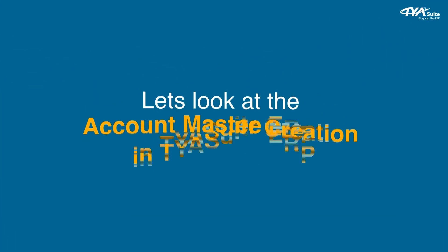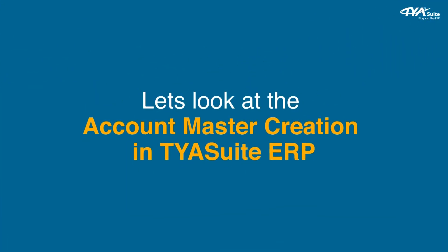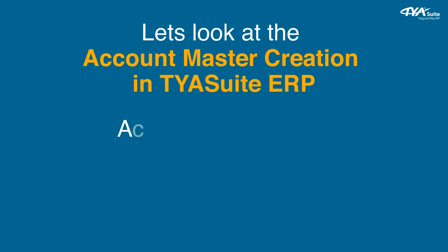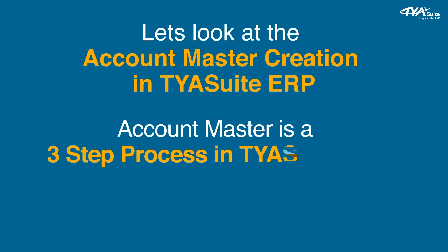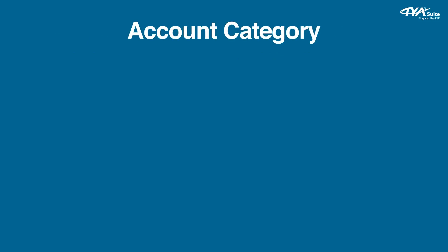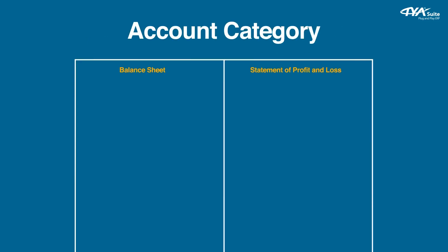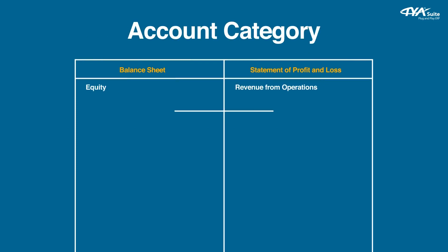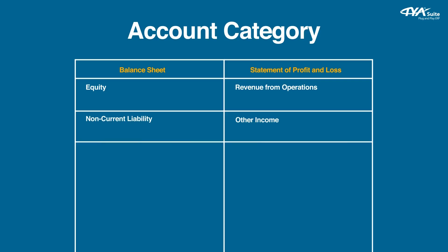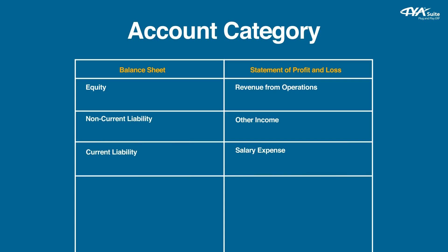Let's look at the Account Master creation in TYASuit ERP. Account Master is a three-step process. First, Account Category – primarily used to define the structure of the profit and loss and balance sheet, as per statutory requirement or internal requirement. For Indian companies, they can select the structure as per Indian GAAP, Ind AS, as per the company reporting requirement.